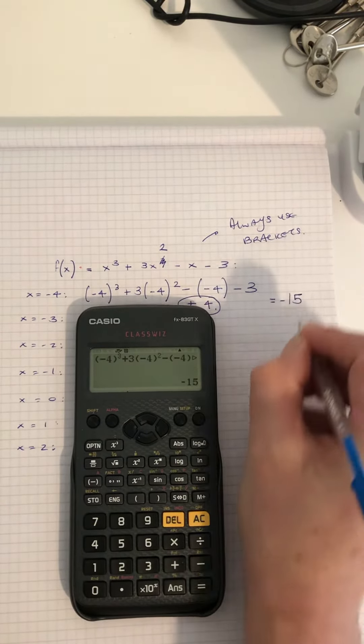So your x value is minus 4 and your y value is minus 15. Do you see? Now that doesn't occur down here because you just have 1 cubed, 3 times 1 squared minus 1 minus 3. 1 cubed is 1 plus 3 times 1 squared is 1 minus 1 minus 3, which is 4, take 1 is 3, which gives you 0. So you'd have 1, 0.